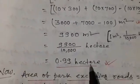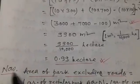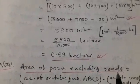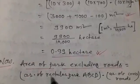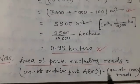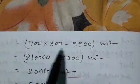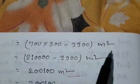It is the area of roads. Now, area of park excluding roads. Area of park excluding roads is equal to area of rectangle park ABCD minus area of crossroads. It is equal to 700 multiply 300, that is area of rectangle park ABCD, minus area of roads 9900 meter square.